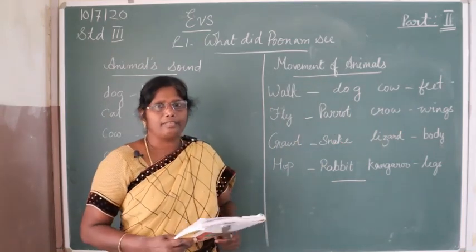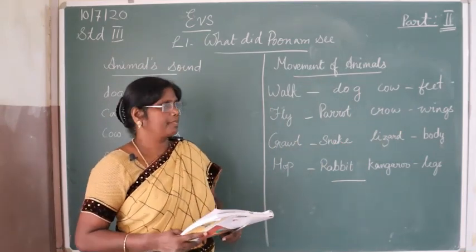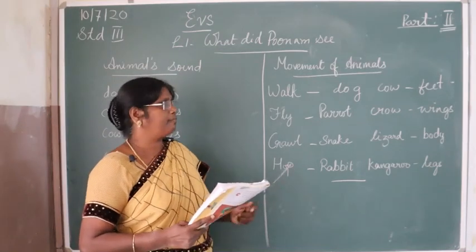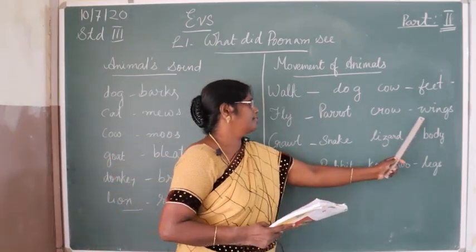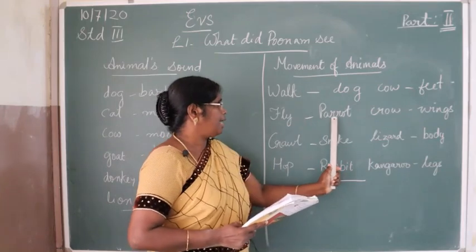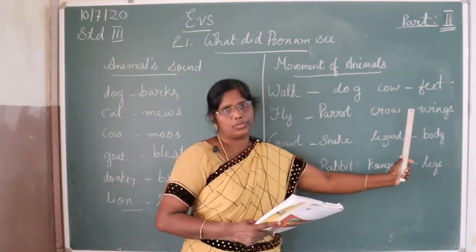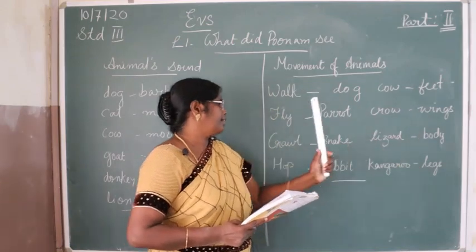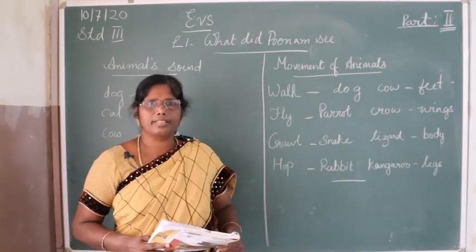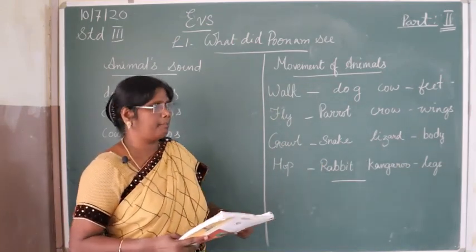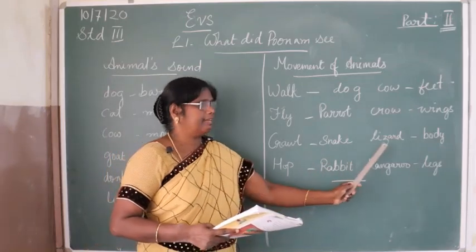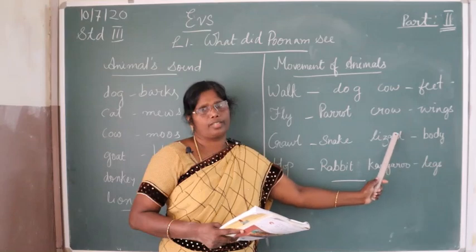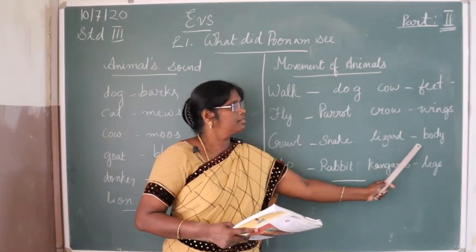Some animals can fly in the air. You know who flies in the air? Birds. Birds fly with their wings — for example, parrot and crow. They use wings to fly in the air. Some animals crawl on the ground, for example snake and lizard. They use their body to crawl on the ground.